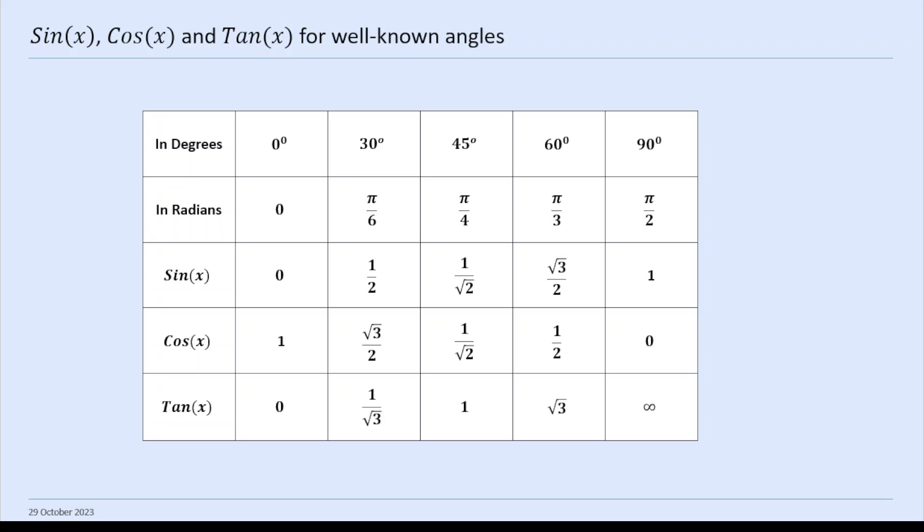And in radians, 0, pi over 6, pi over 4, pi over 3, pi over 2. Then what you've got is sine 0 is 0, sine 30 degrees is a half, sine 45 degrees is 1 over root 2, sine 60 degrees is root 3 over 2, and sine 90 is 1. You've got the numbers for cos and tan as well.